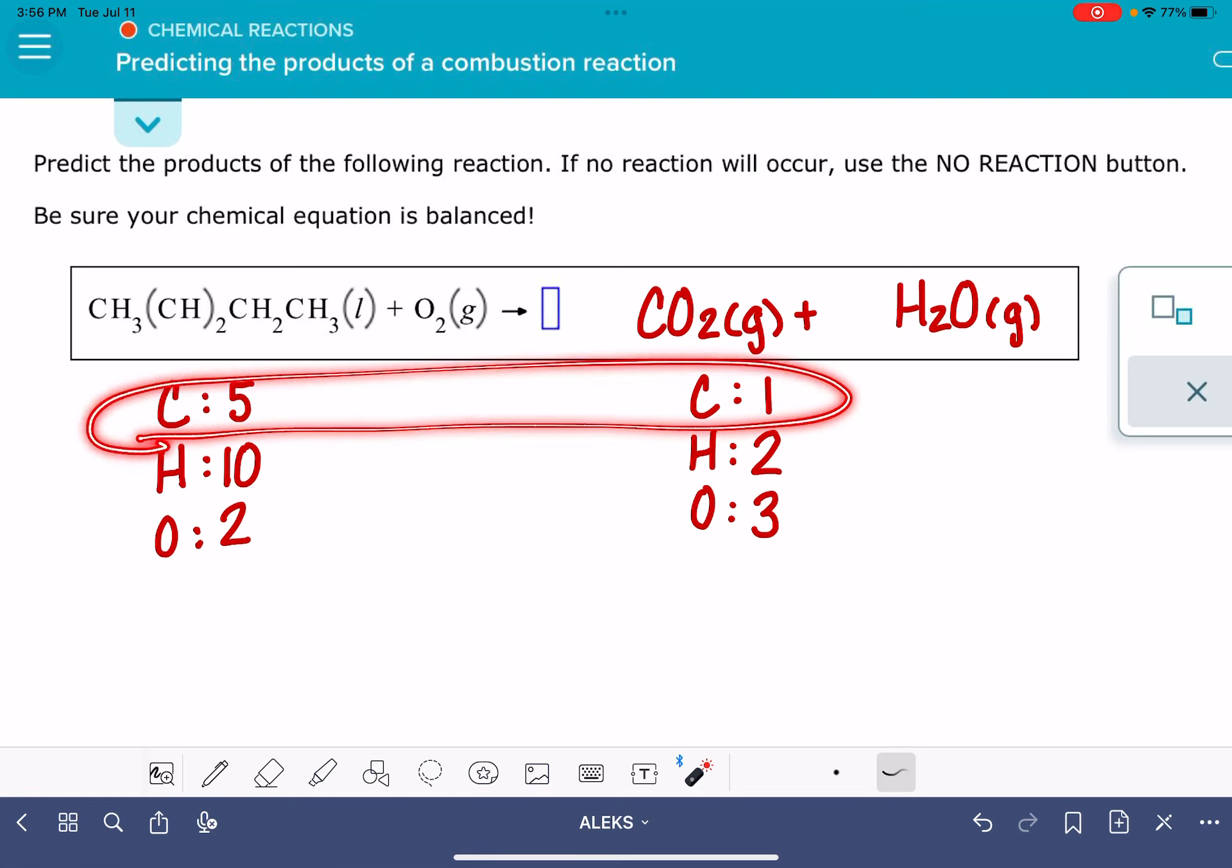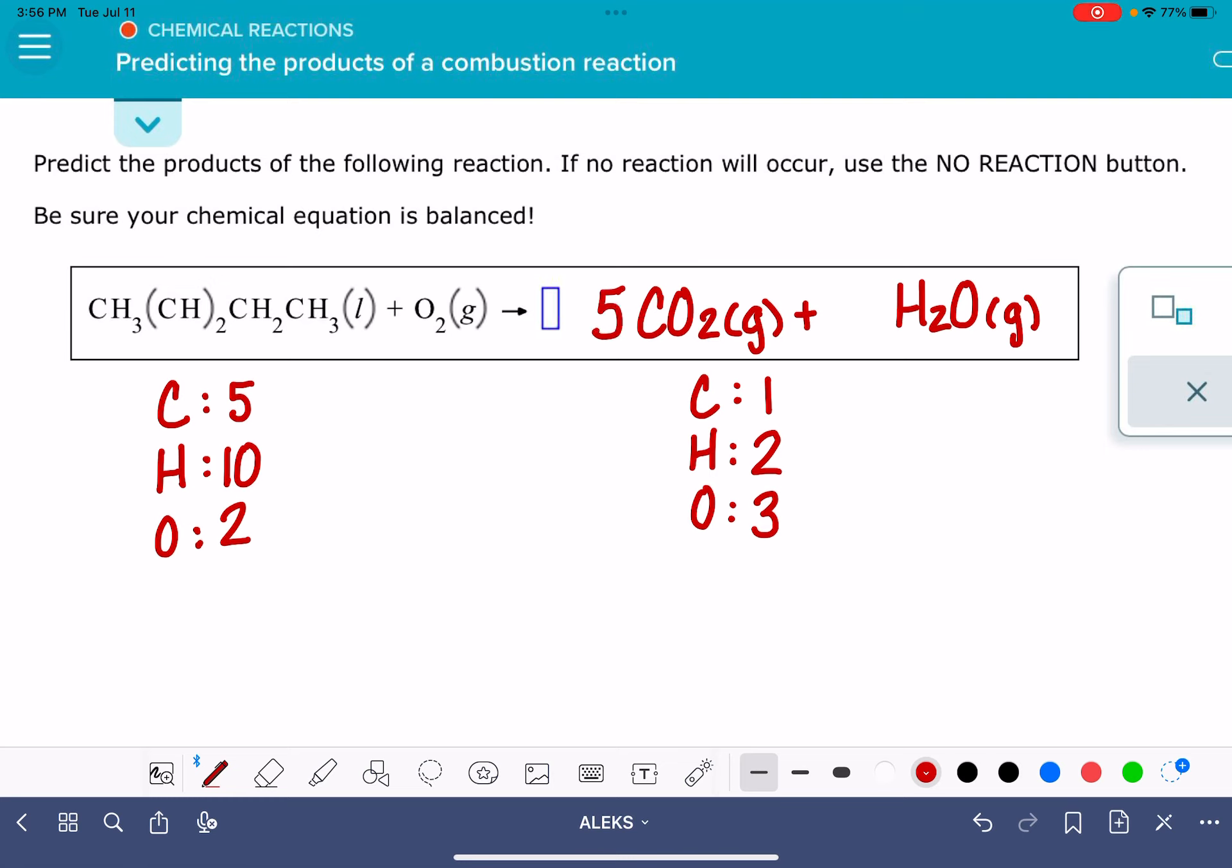I'm going to start by balancing my carbon atoms. I've got 5 on the left side, so I'm going to put a 5 in front of the CO2. That's going to change my number of carbon atoms to 5. It's also going to change my number of oxygen atoms. Now I have 5 times 2 is 10, plus 1 is 11.